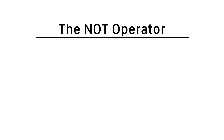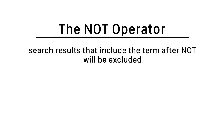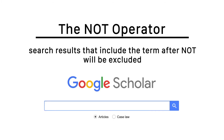One last operator is the NOT operator, which should be used very sparingly. Putting NOT before a word will tell the database to ignore any results that would be returned by a search of that word. This may lead you to accidentally filtering out some sources that could be useful to you. A good time to use this is if you are trying to search a keyword that is part of multiple common phrases, and you only want to return one of them. You can either put your entire term in quotes, or use a NOT operator to ensure the unwanted term is ignored.